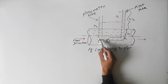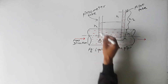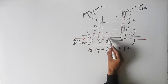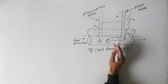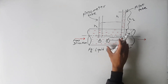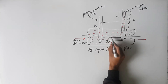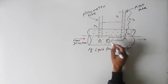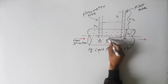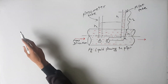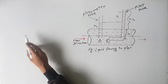The pressure measured by a piezometer tube is called static pressure — the pressure in the flowing fluid. The pressure measured by the pitot tube at the point where the velocity is reduced to zero is called stagnation pressure. So we define stagnation pressure and static pressure here.